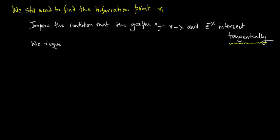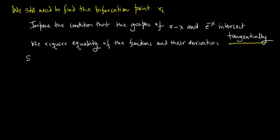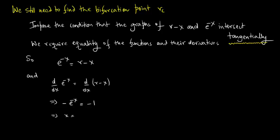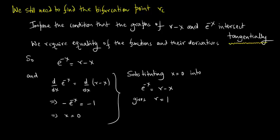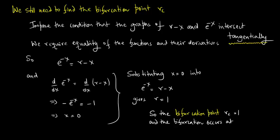We require equality of the functions and their derivatives. So e^(−x) = r − x, and d/dx of e^(−x) = d/dx of (r − x), which gives −e^(−x) = −1, yielding x = 0. Substituting x = 0 into e^(−x) = r − x gives r = 1. So the bifurcation point is at r_c = 1 and the bifurcation occurs at x = 0.